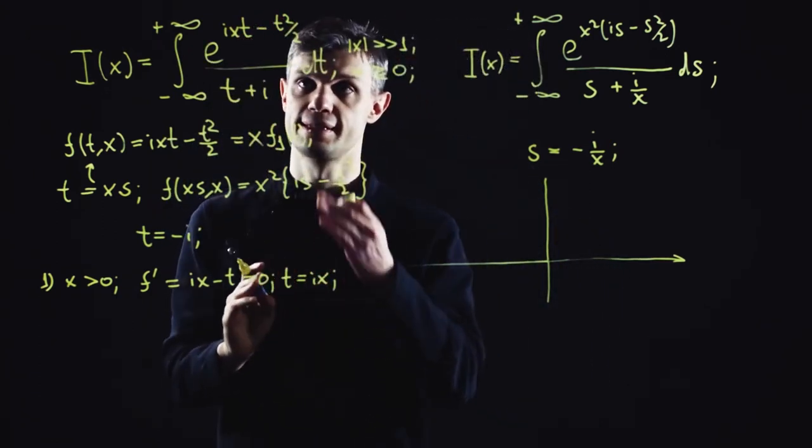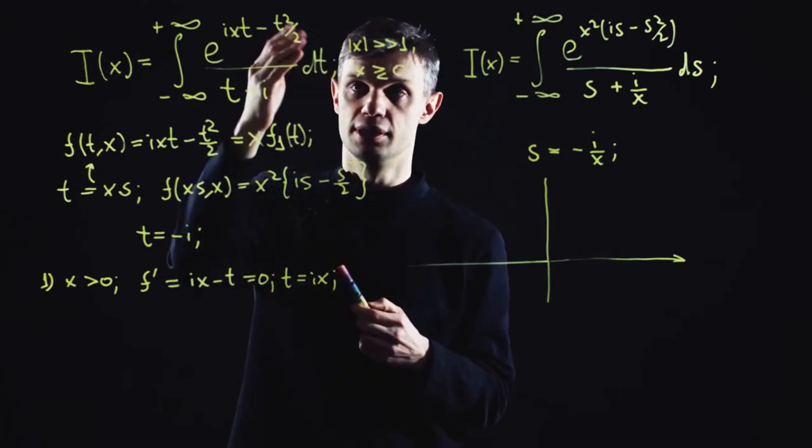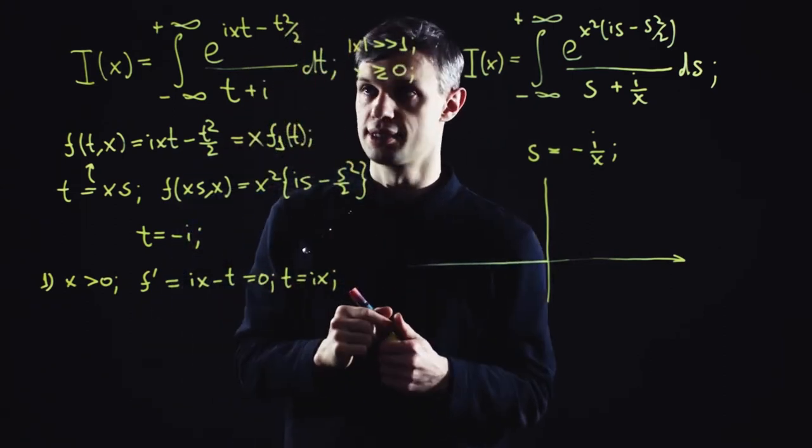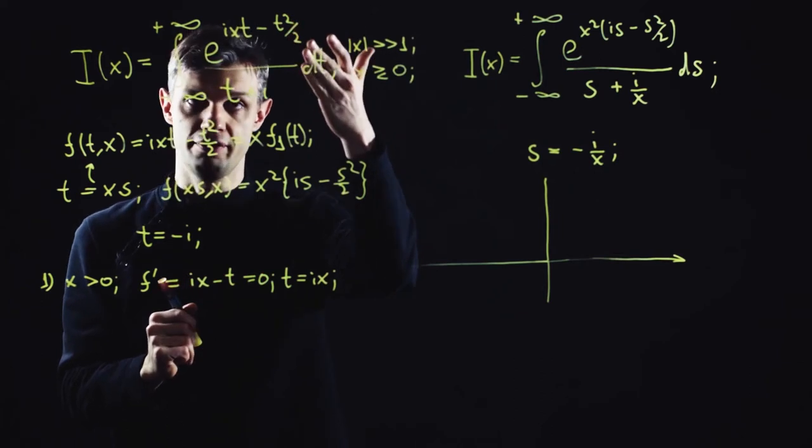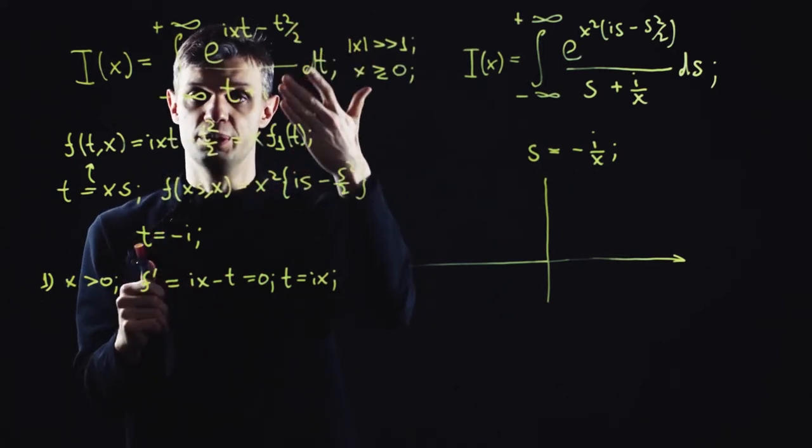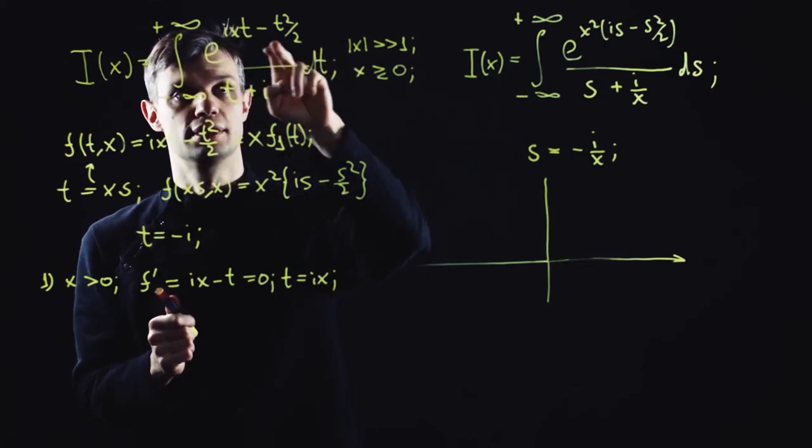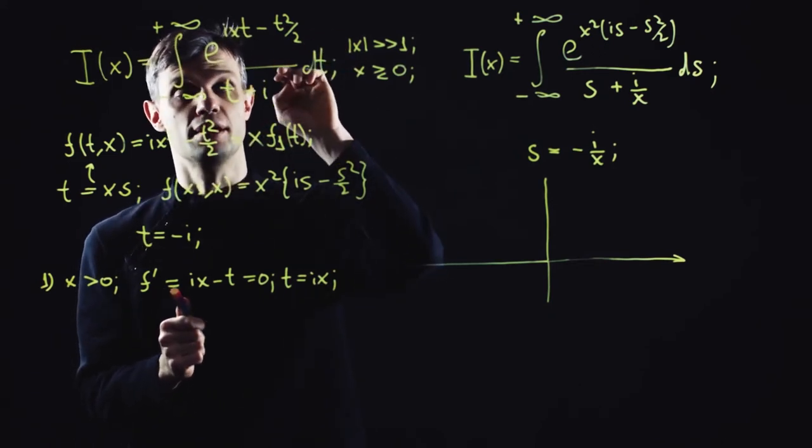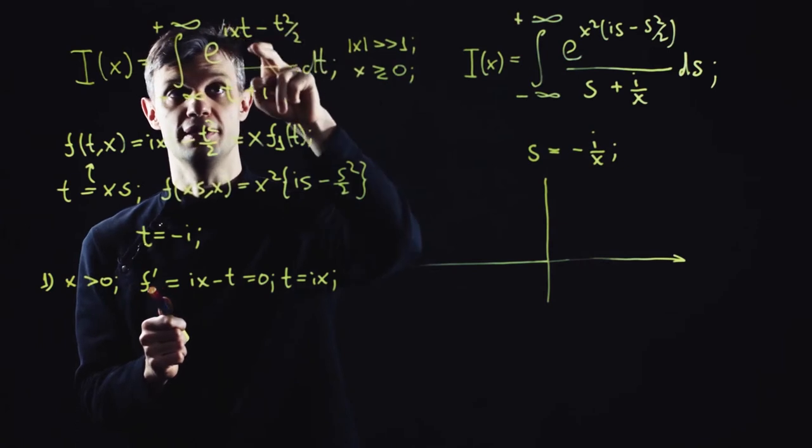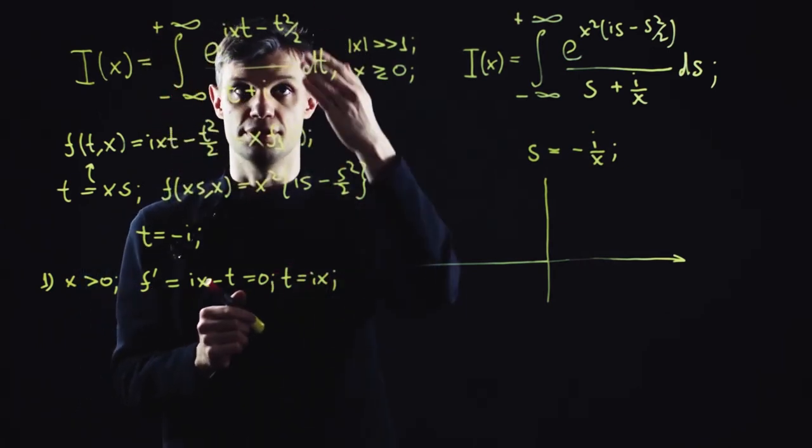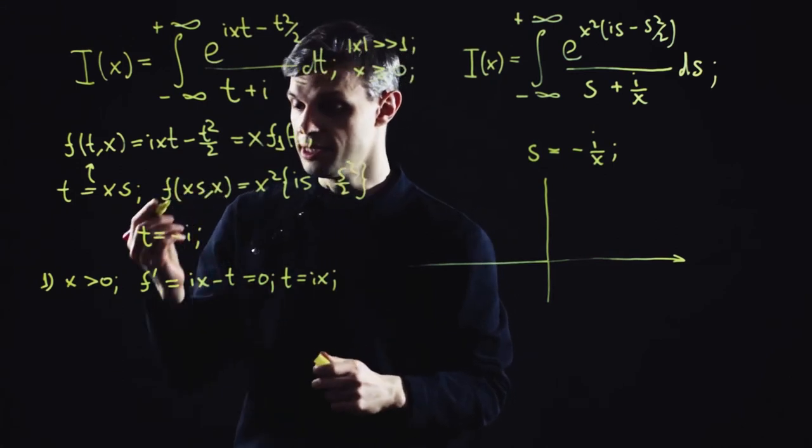So let's discuss these convergence regions. Since we are interested in large t behavior, because obviously only large variable behavior is crucial for the convergence, we can simplify our exponent function. Namely, we can drop the linear in t term in comparison to the quadratic in t term because the second one is going to be obviously the leading.